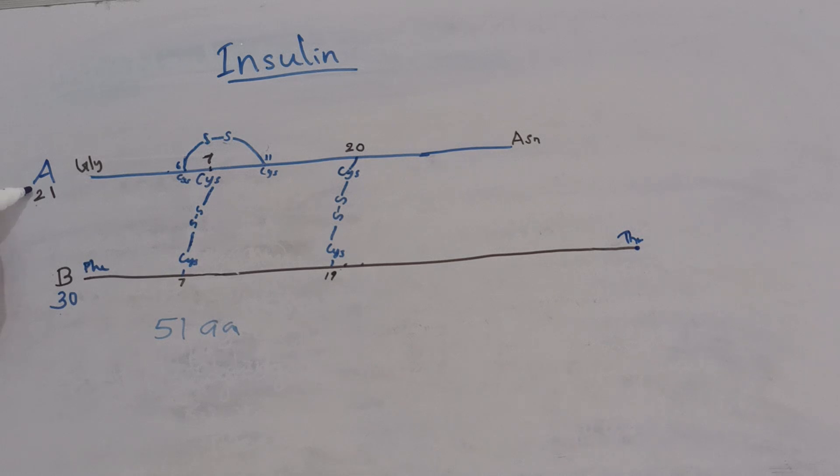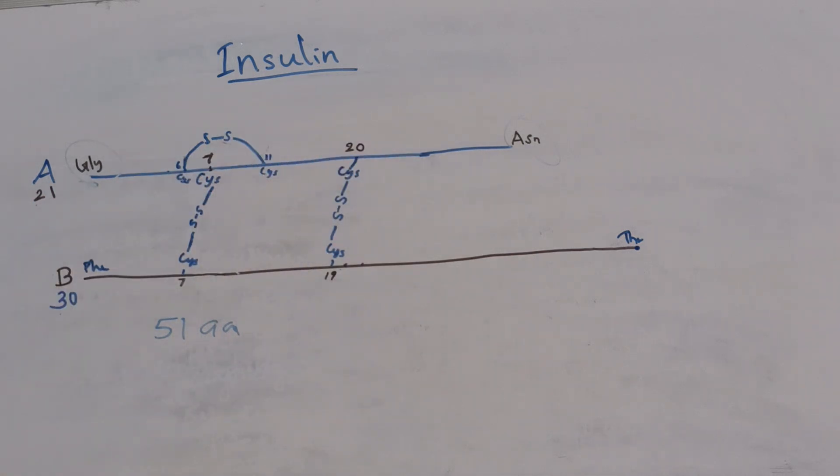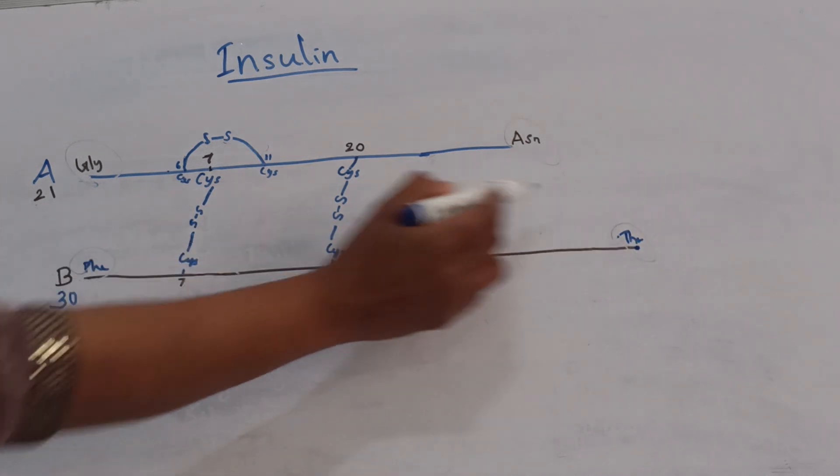In A chain, the N-terminal amino acid is glycine and C-terminal amino acid is asparagine. In B chain, the N-terminal amino acid is phenylalanine and C-terminal amino acid is threonine.